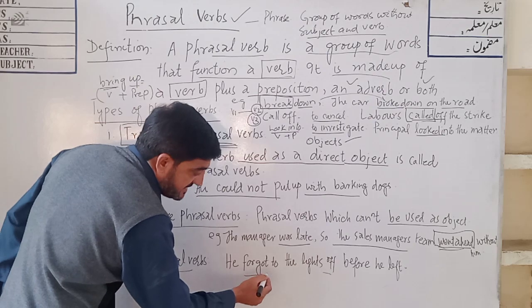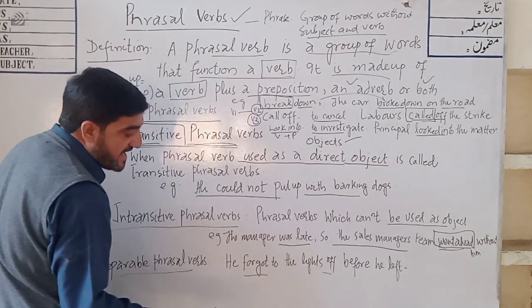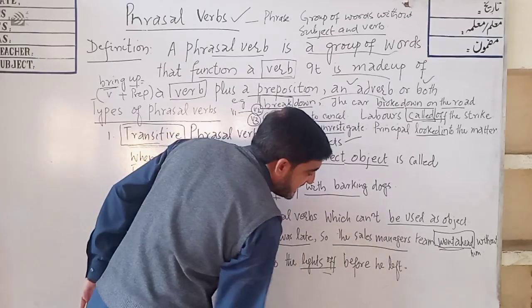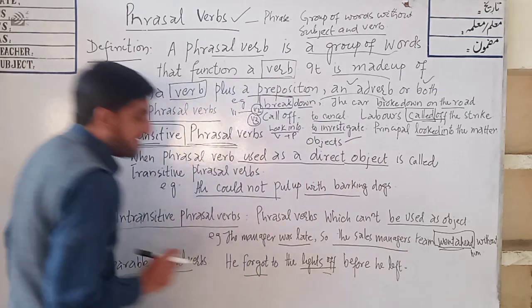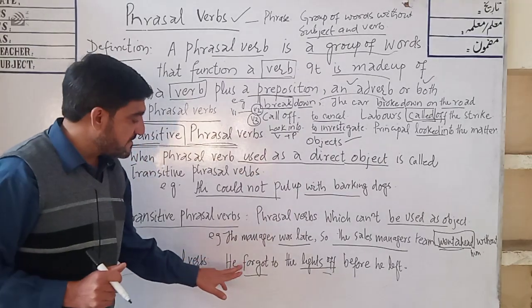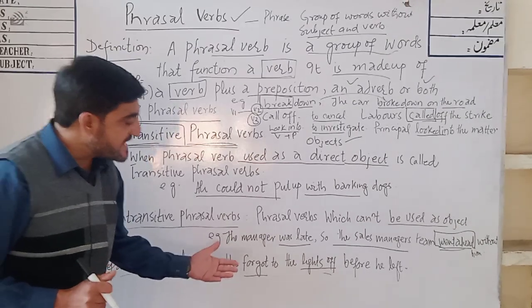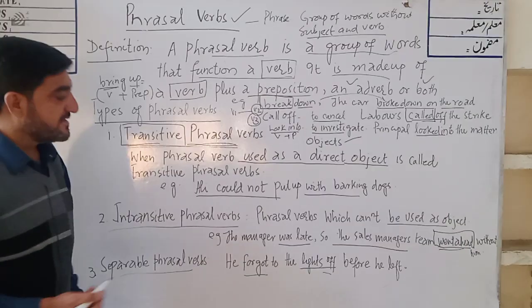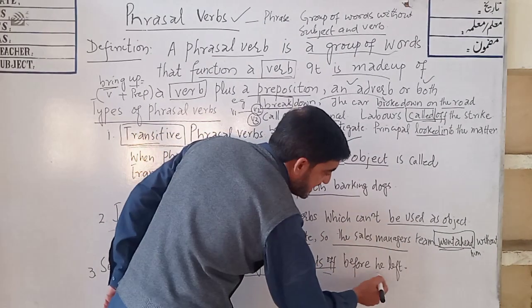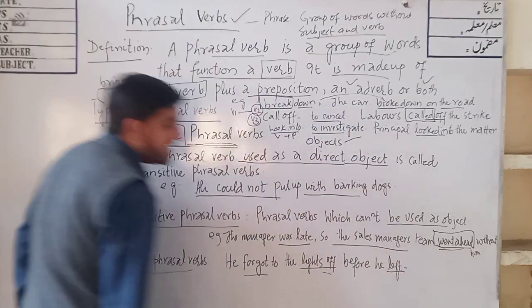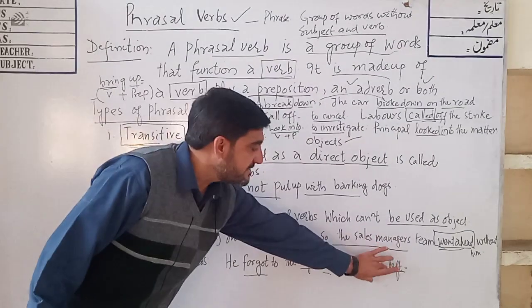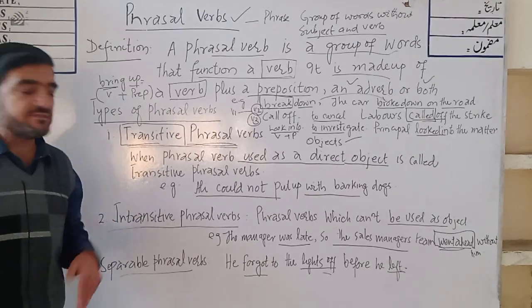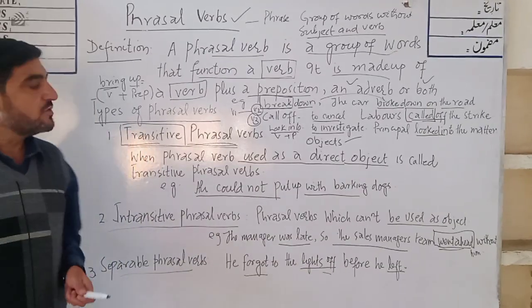For example: 'He forgot to turn the lights off before he left.' Here 'turn off' is the phrasal verb, and it has been separated — 'the lights' is placed between 'turn' and 'off.' So this is a separable phrasal verb because it has been divided into parts.